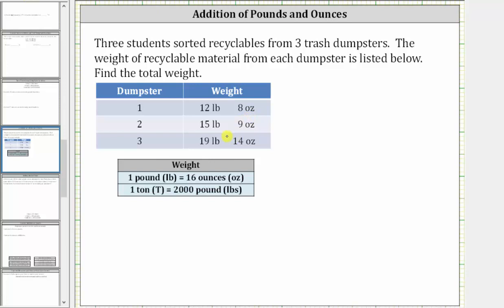Let's first determine the total weight by organizing the weights in a table. Let's have a column for the ounces and a column for the pounds. We have 12 pounds 8 ounces, 15 pounds 9 ounces, and 19 pounds 14 ounces.